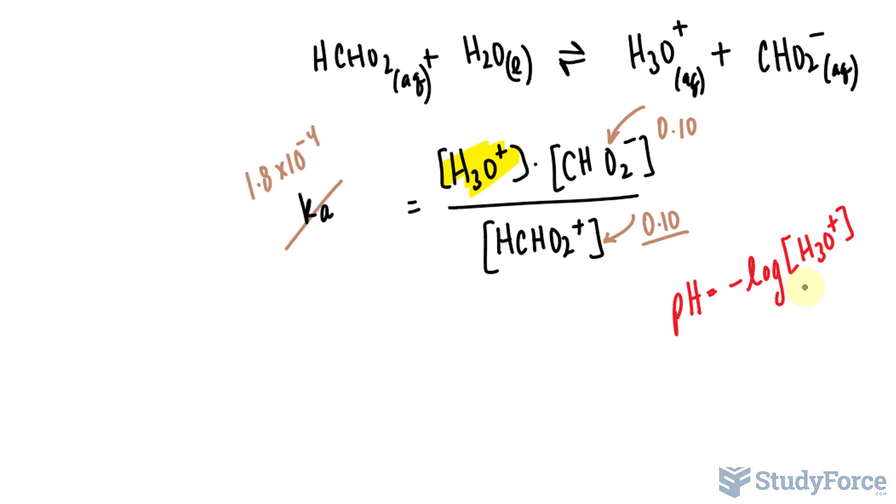So let's go ahead and plug these numbers in and solve for H3O+. I have 1.8 times 10 to the power of negative 4 on the left side. I'll multiply both sides by what's in the denominator, which is 0.10. That will cancel out the denominator here. And then I'll divide both sides by 0.10. Leaving us with, on the right side, the concentration of H3O+.